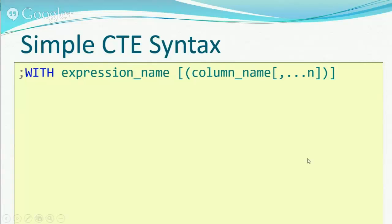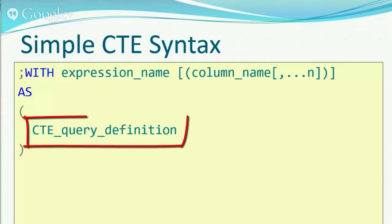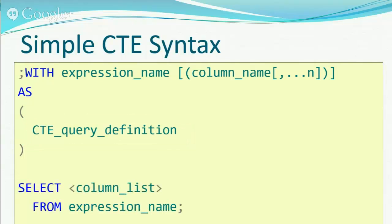In the syntax, you write WITH and give it a name, then optionally define column names — there are certain cases where you have to, but most of the time you don't need it. Then you use the AS keyword and place a subquery-style query inside parentheses, just like a subquery.